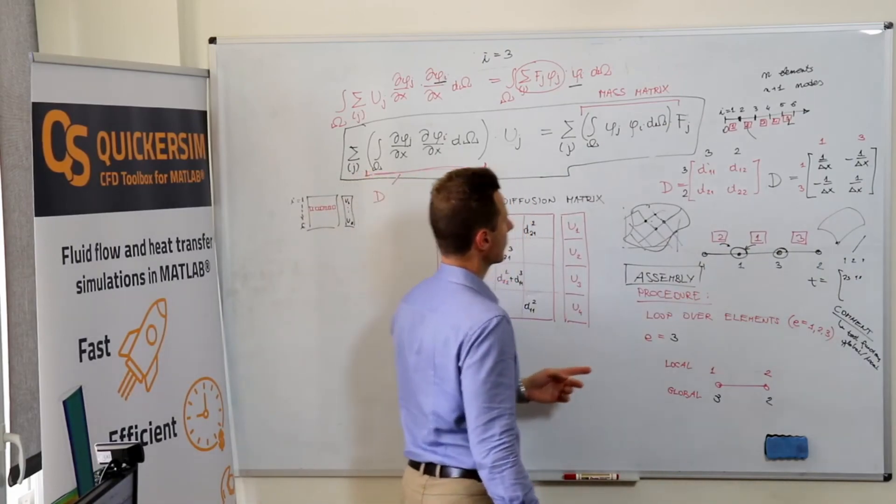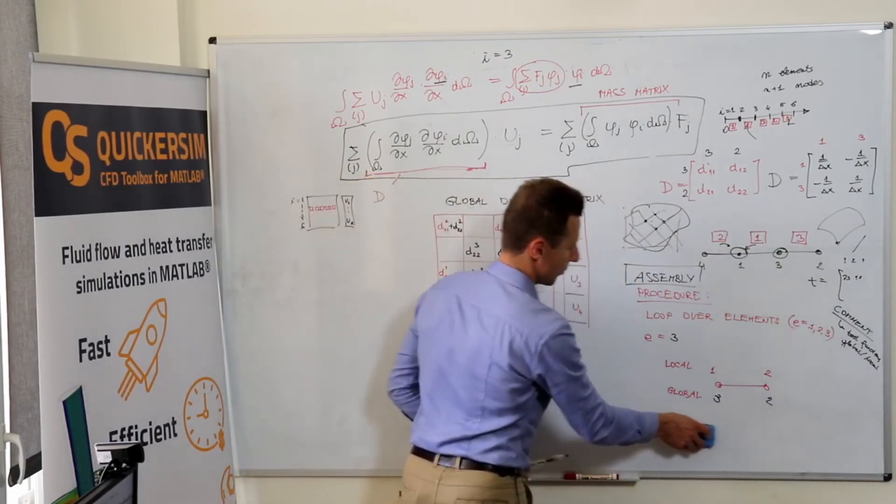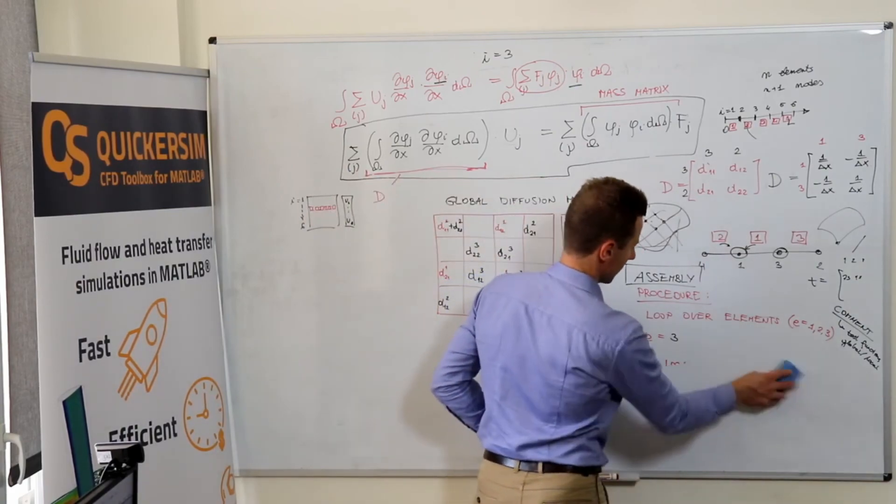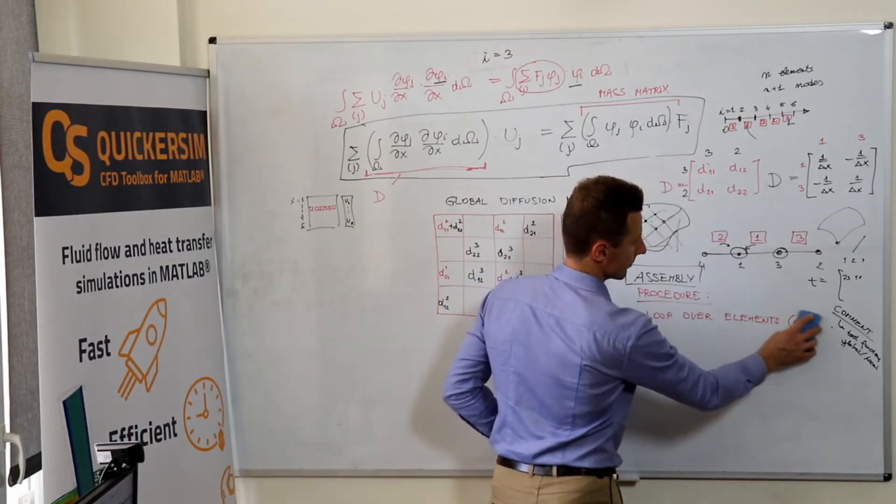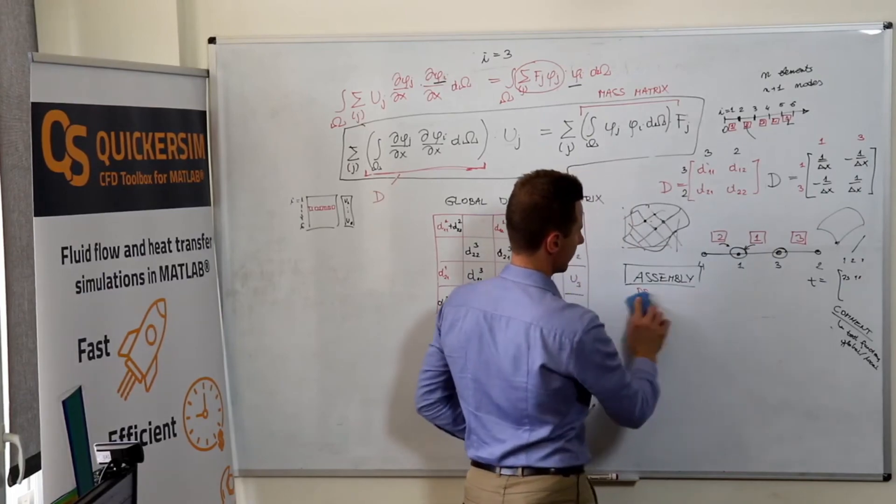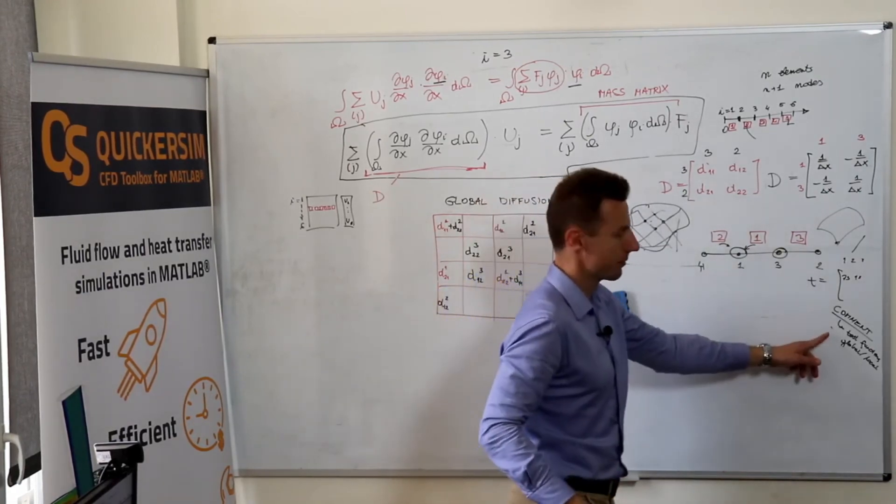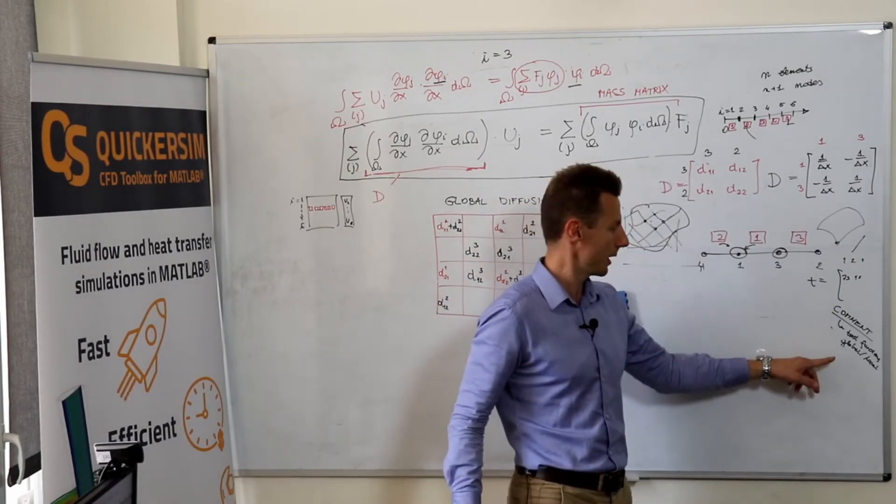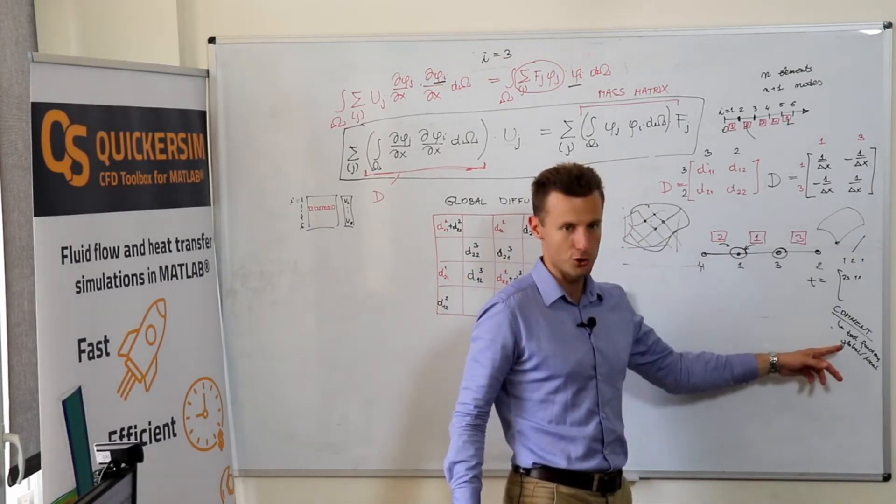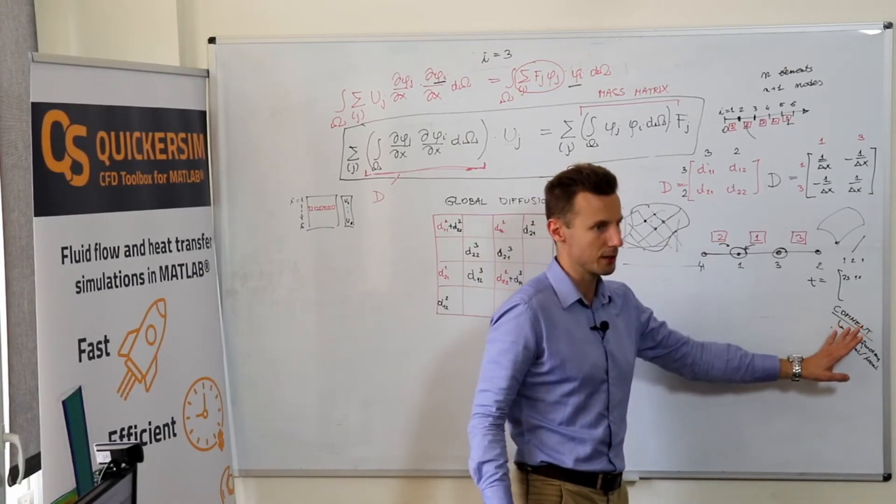That's the main reason why we generally cannot be computing the gradients or the values of the shape functions in such a naive way as we could have done here in the simple example.